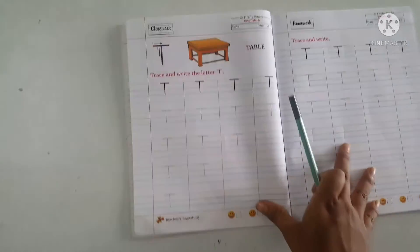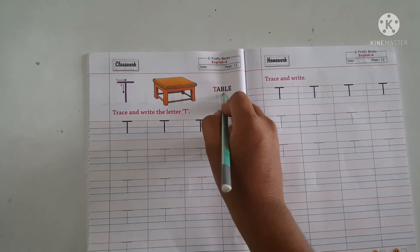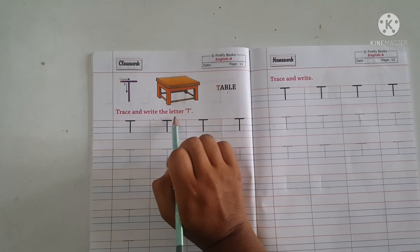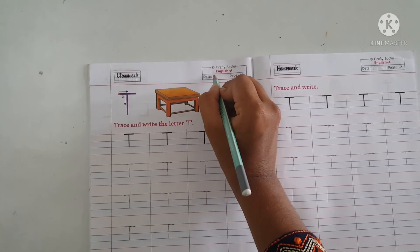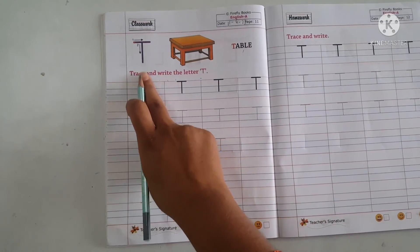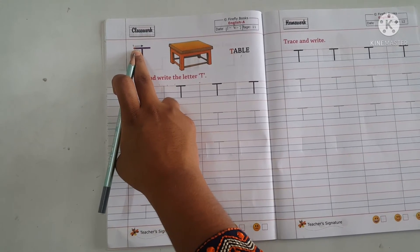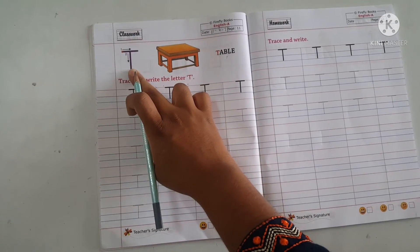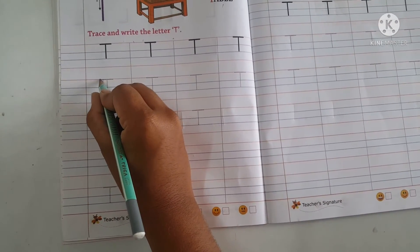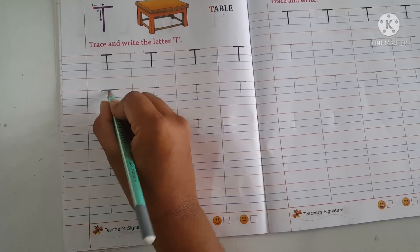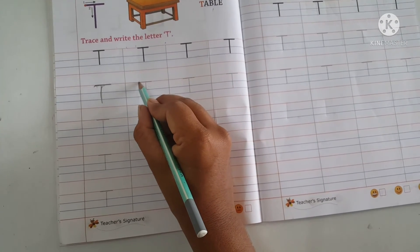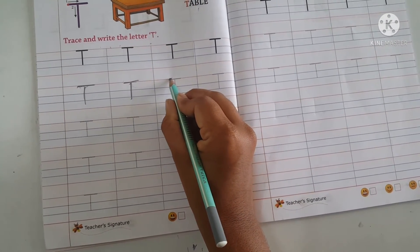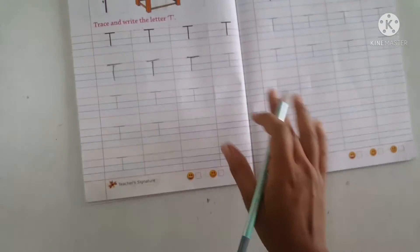Letter T, T for table. Trace and write letter T. See, first draw line, sleeping line, and second is standing line. So you can see, sleeping line and standing line. Make a letter T.